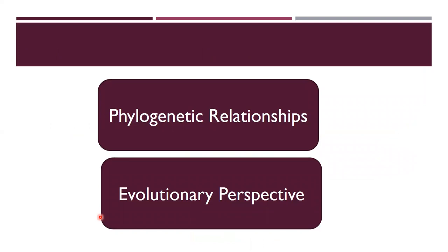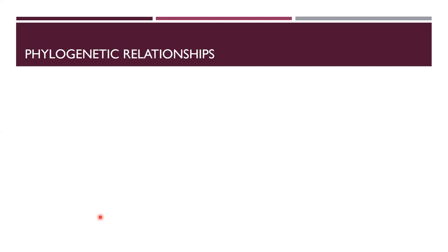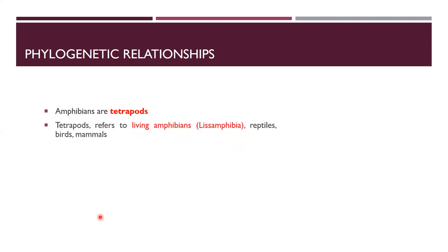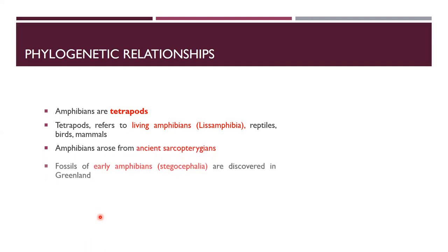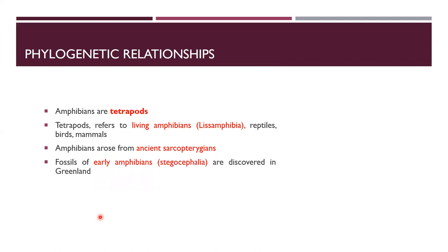The second point is the phylogenetic relationship or evolutionary perspective of amphibians. Amphibians are tetrapods — having four limbs. Tetrapods refer to living amphibians, reptiles, birds, and mammals. Amphibians also arose from ancient Sarcopterygians. Fossils of early amphibians, Stegocephalia, were discovered in Greenland. They are a 400-million-year-old group called Ichthyostegalia or Ichthyostega, which arose from Sarcopterygian ancestors.